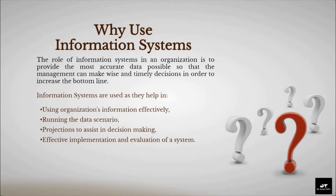Why should organizations use information systems? The role of information systems in an organization is to provide the most accurate data possible, so that the management can make wise and timely decisions in order to increase the bottom line. Point 1: Using organizations' information effectively. When decisions are based on data available from information systems, they reflect information that comes from the operations of the company. Information systems take data generated by the working level and organize it into useful formats, typically containing sales figures, expenses, investments, and workforce data. For example, if management needs to know how much profit the company has made each year for the past five years, information systems can provide accurate reports.